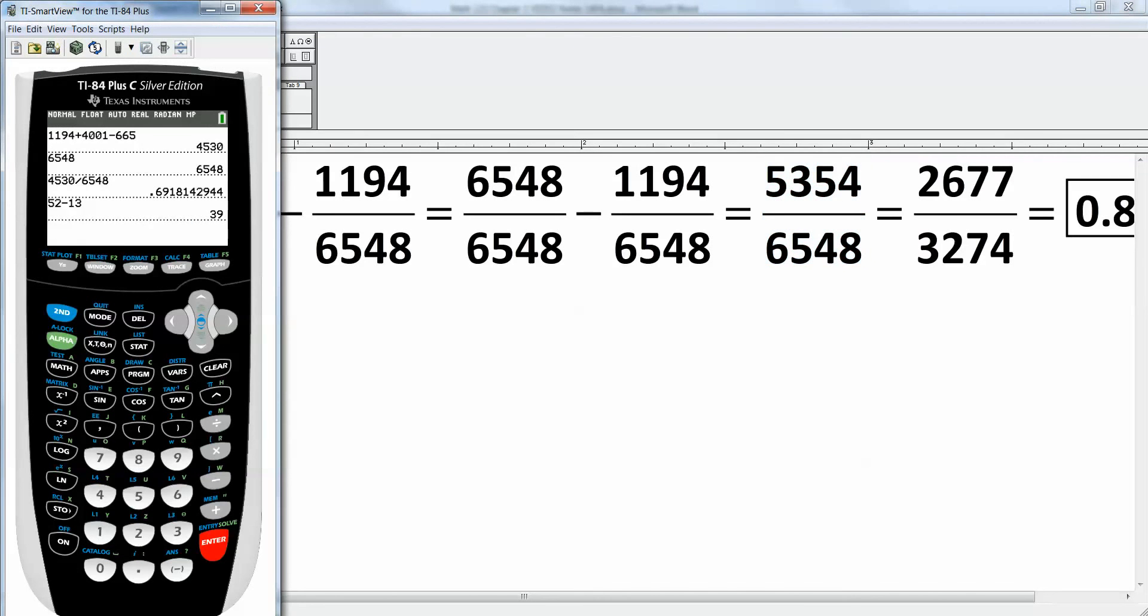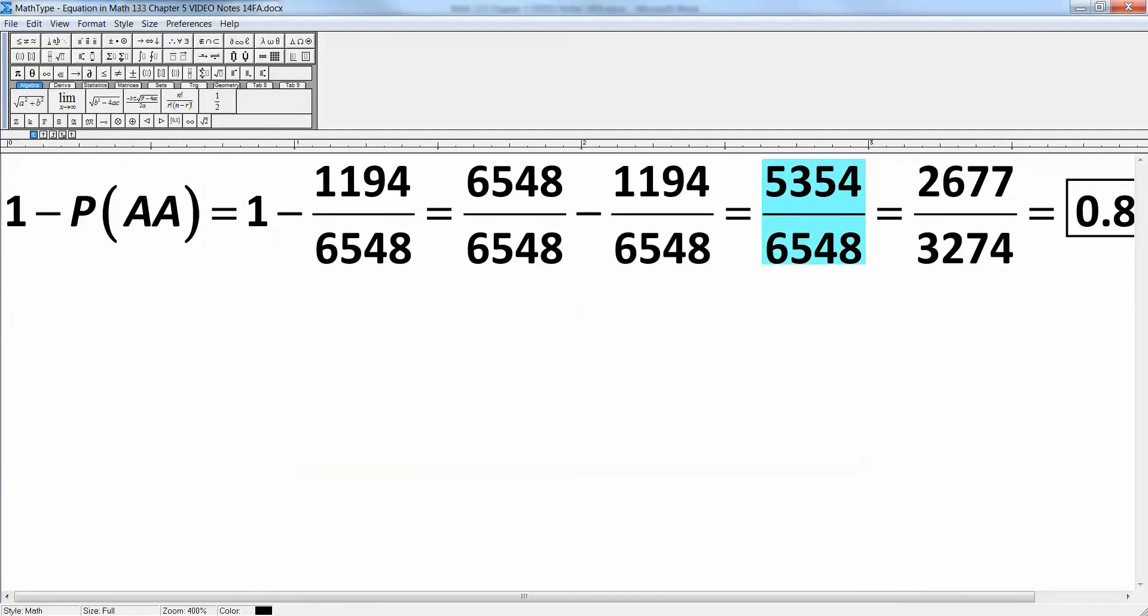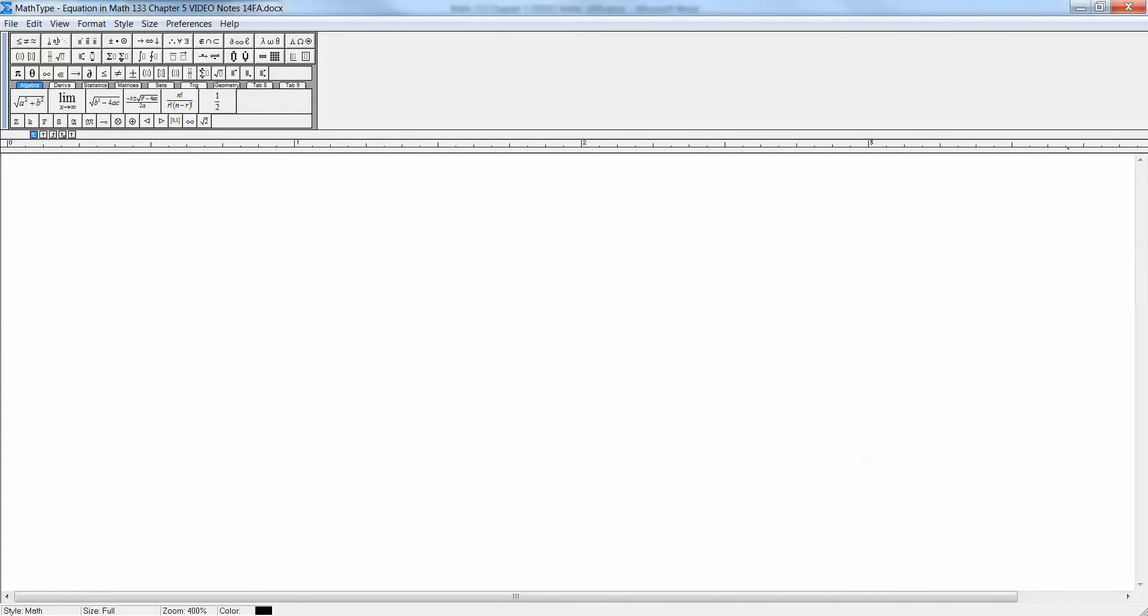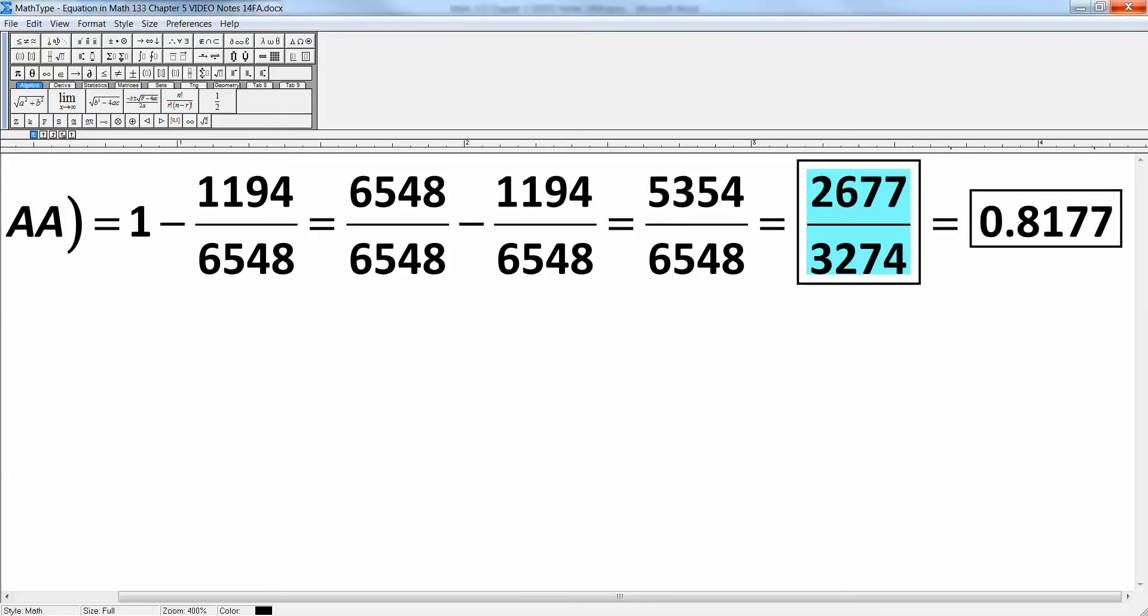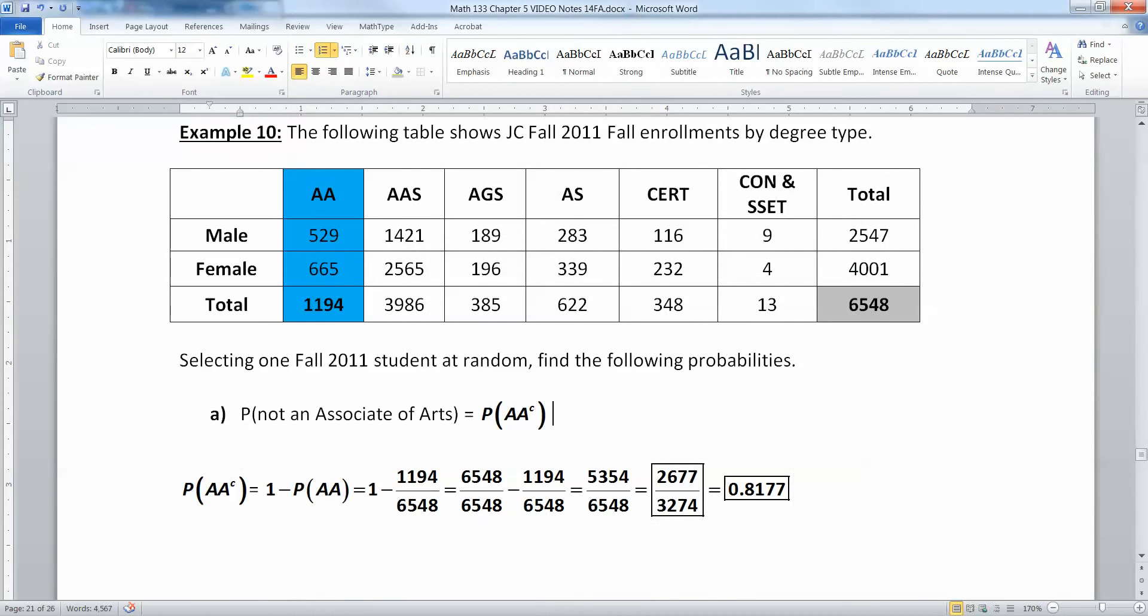I can just use my calculator to do that. 6548 take away 1,194, and then divide that by 6548. 5,354 divided by 6548. And then I press math number 1, enter, and it'll turn into a fraction for me. So it's a reduced fraction of 2677 over 3274, or it gave me the decimal of 0.8177.